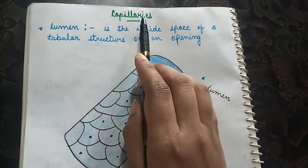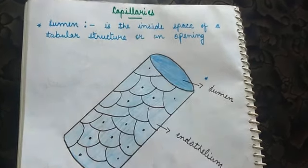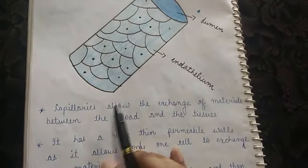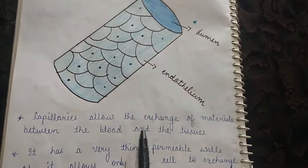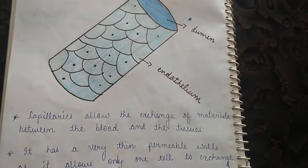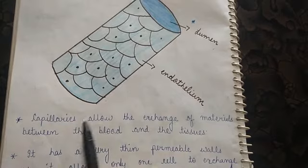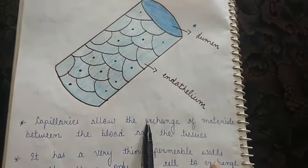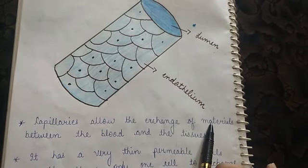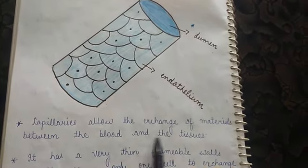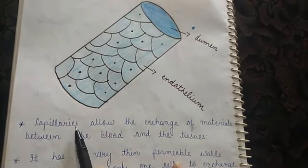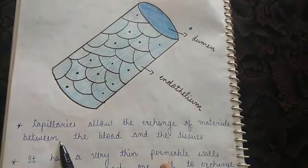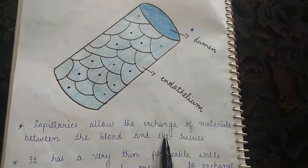Now let's see the major functions that are performed by capillaries. The first one is capillaries allow the exchange of materials between the blood and the tissues. This exchange of materials takes place between the blood and the tissues.